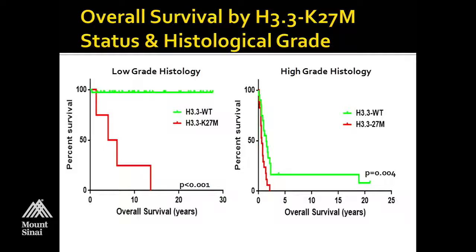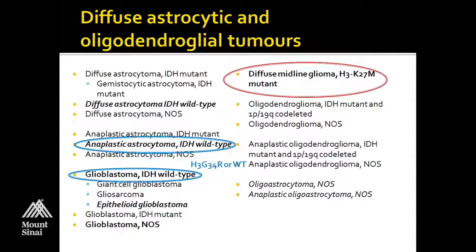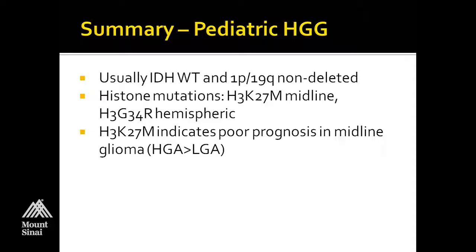This is overall why we decided in the WHO to give these diffuse midline gliomas a WHO grade 4. There's this new category: diffuse midline glioma H3K27M mutant. The pediatric tumors will fall into the IDH wild-type group. Currently the H3G34R mutations are not part of the classification and will also fall into the IDH wild-type group. To summarize: pediatric high-grade gliomas are usually IDH wild-type and 1p19q non-codeleted; they frequently have histone mutations — H3K27M in the midline or G34R in the hemispheres — and H3K27M is a useful marker for prognosis in midline gliomas, even for low-grade astrocytomas.